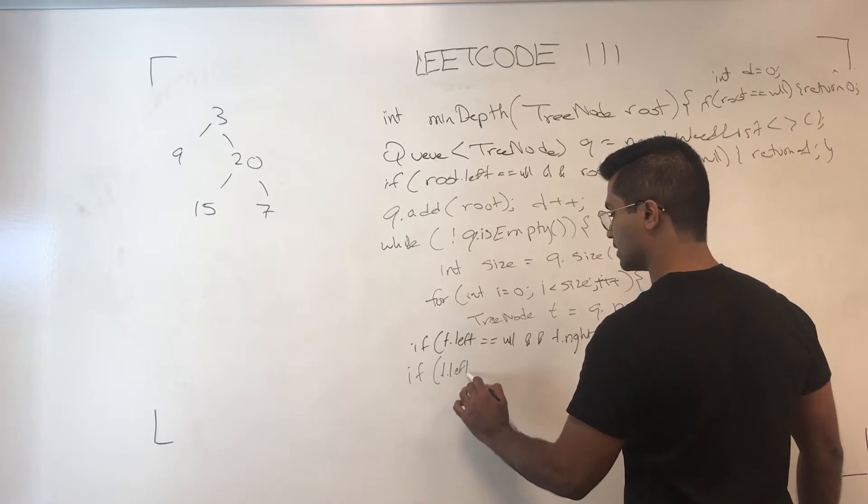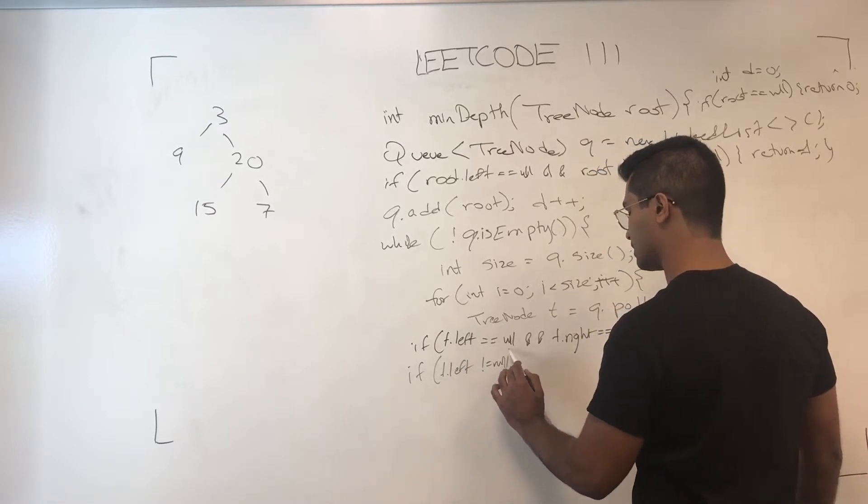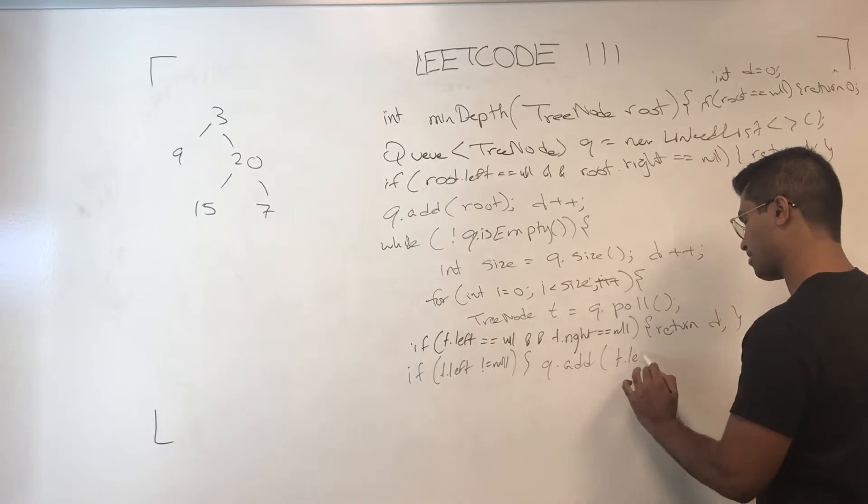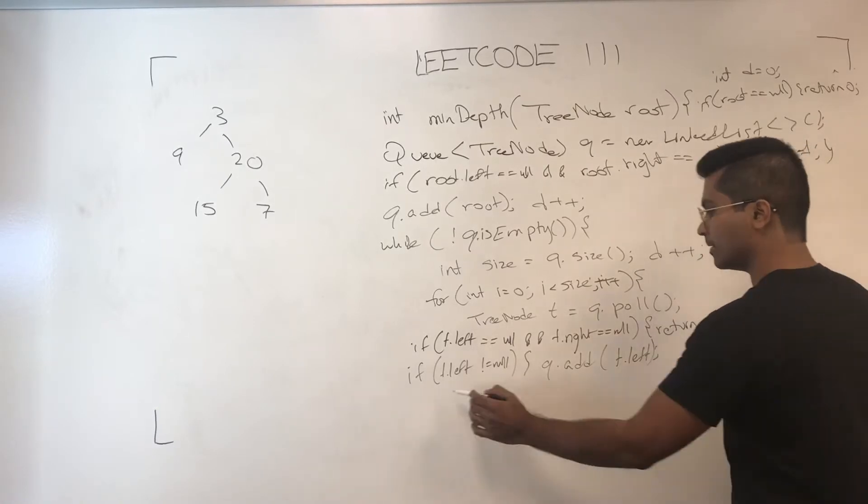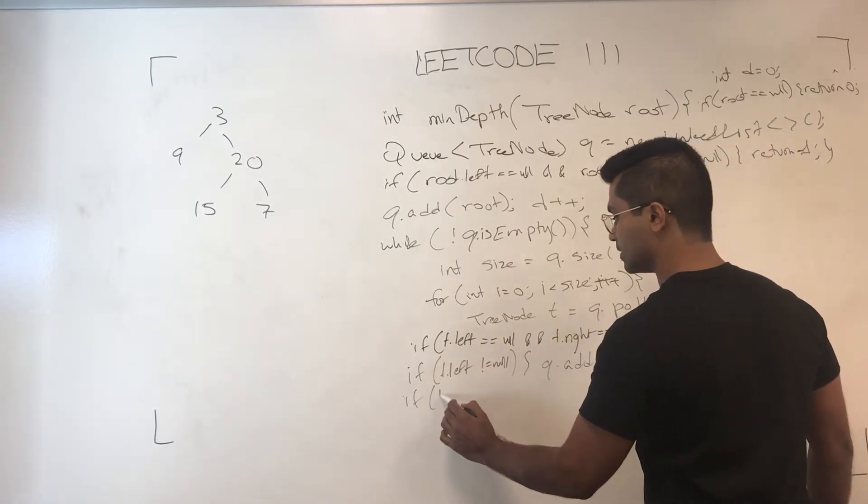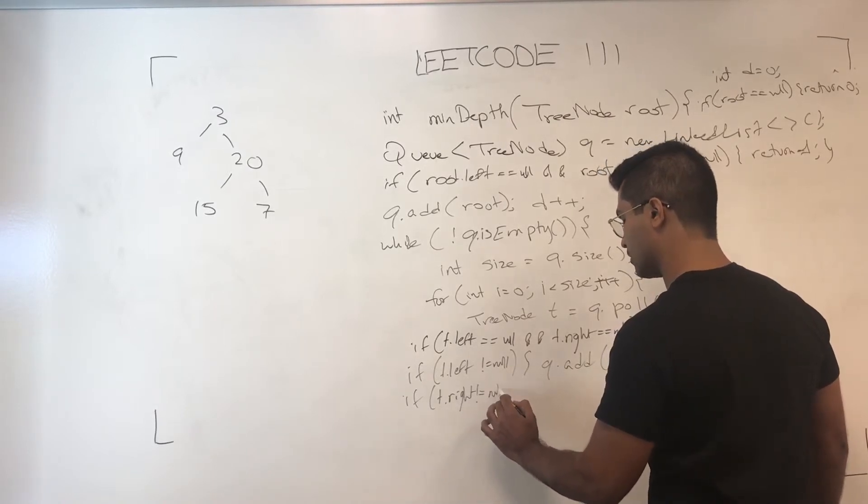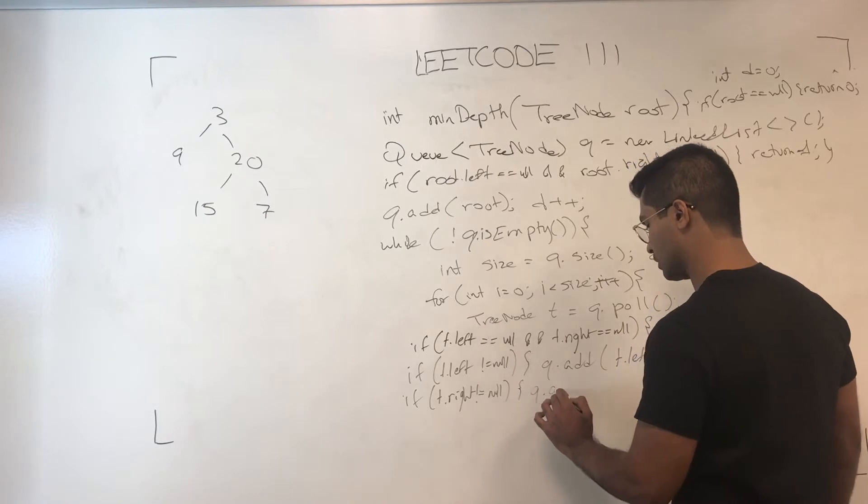If t dot left is not null, we add it to the Q. If t dot right is not null, we add it to the Q.